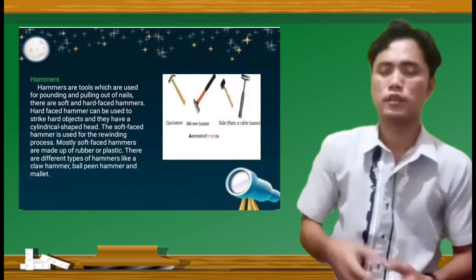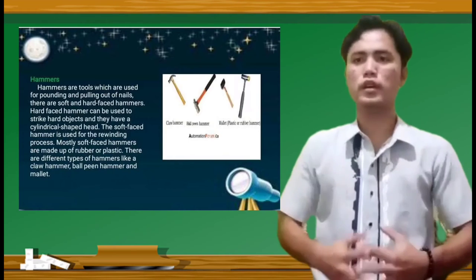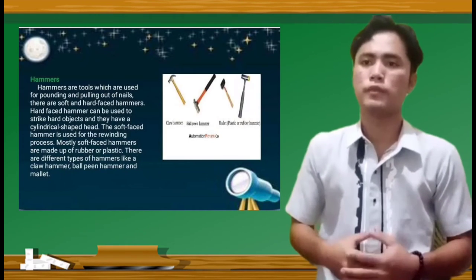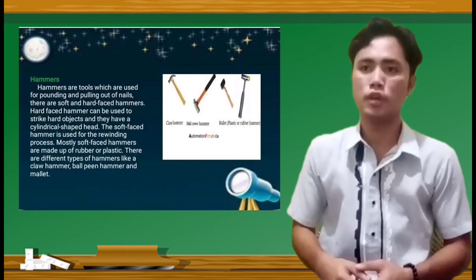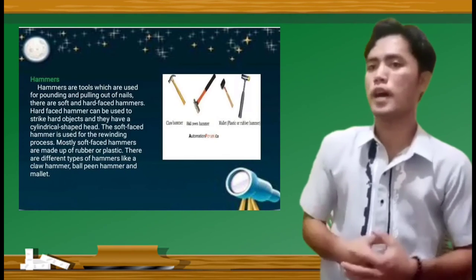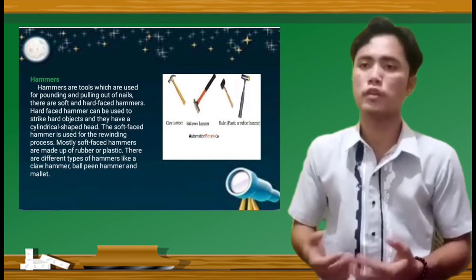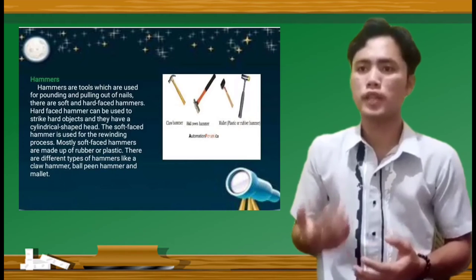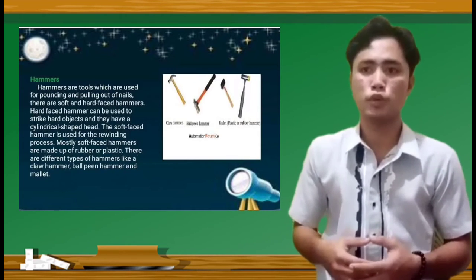Next, hammers. Hammers are tools which are used for pounding and pulling out of nails. There are soft and hard face hammers. Hard face hammers can be used to strike hard objects and they have a cylindrical shaped head. The soft face hammer is used for the rewinding process.